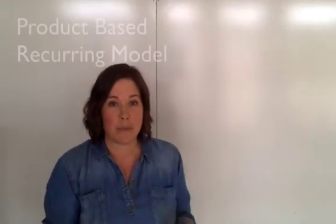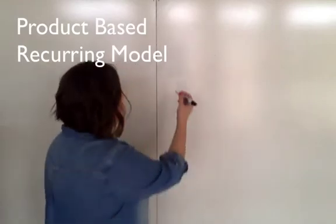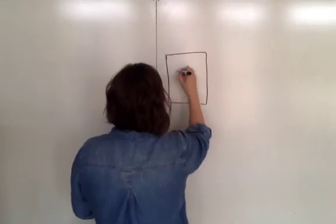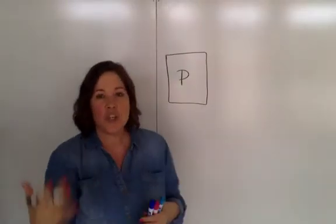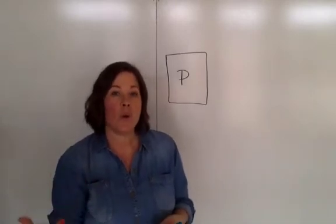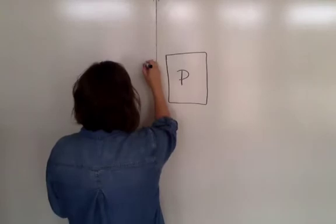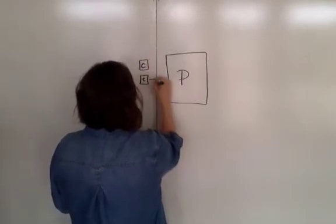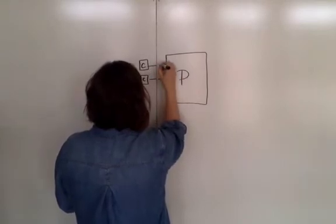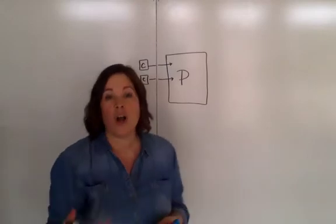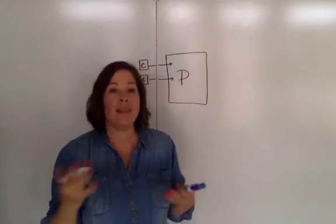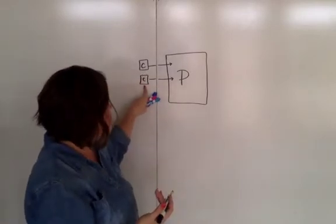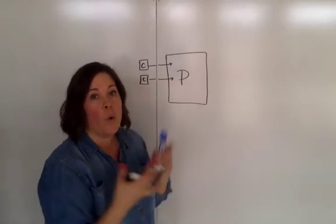So in a product-based recurring model, you are going to have your one product. We'll put a P right there. And as you create new content, you're going to put that new content - so we'll put little pieces, content will be our little Cs - you're going to just add them into the product. More than likely, you're going to also be calling these your categories, but it's not limited to your categories. You could add a new post of information. So these little pieces of content continually go into one product.